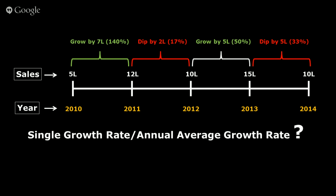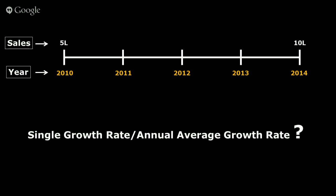This single growth rate, or average annual growth rate, is what is called the CAGR — the Compounded Annual Growth Rate. In our example, we are going to represent the CAGR with a small 'r', and we will now calculate that value.